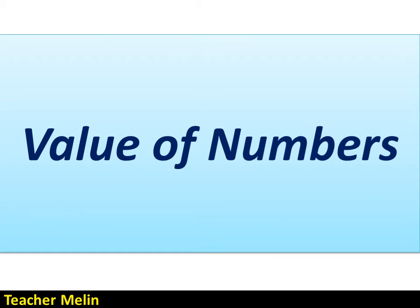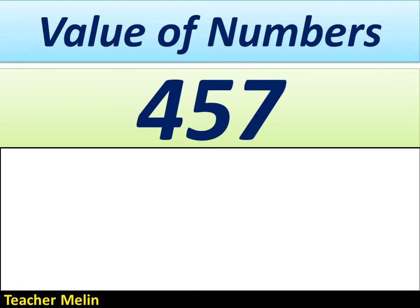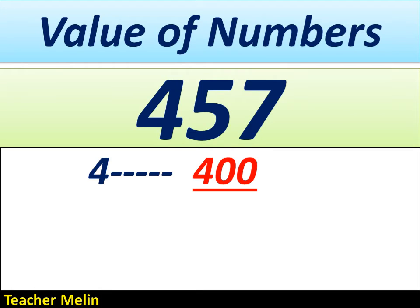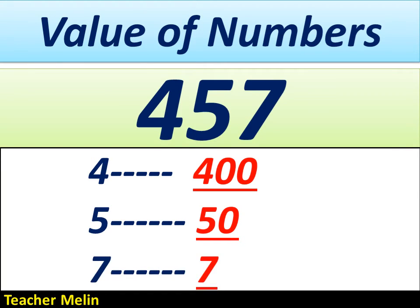Let's proceed to the value of numbers. For example, the number is 457. The value of 4 is 400. The value of 5 is 50. And the value of 7 is 7.